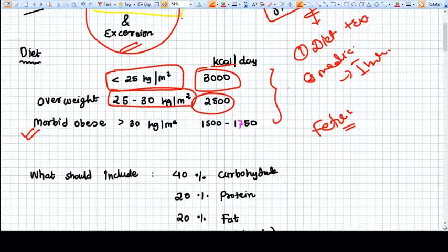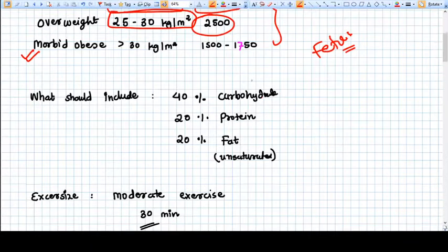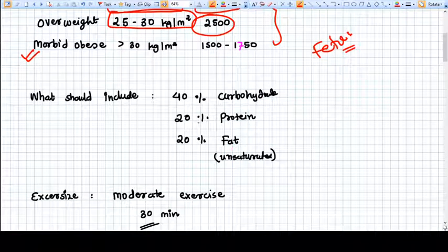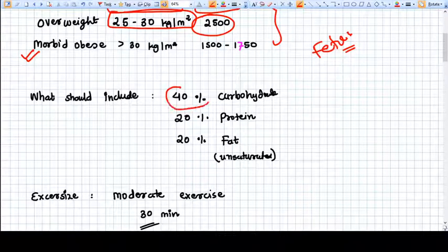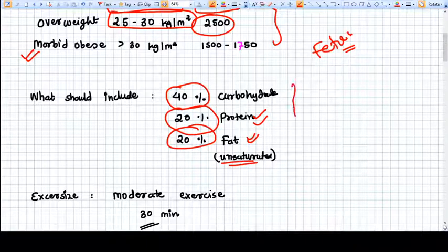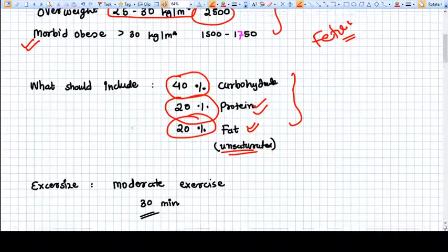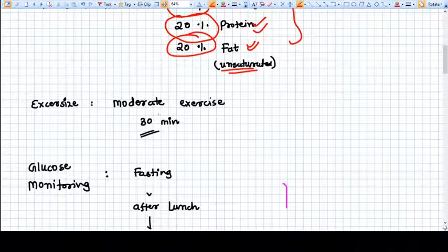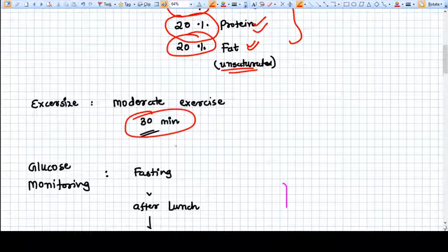What should be included in the diet: 40% carbohydrate, 20% protein, and at least 20% unsaturated fat. This is the diet composition. Moderate exercise of 30 minutes minimum we provide to the patients.